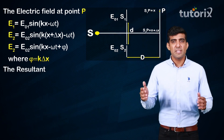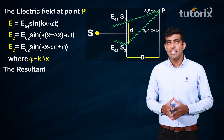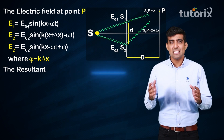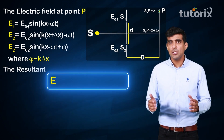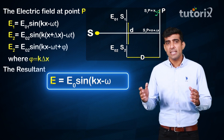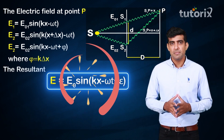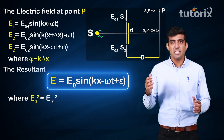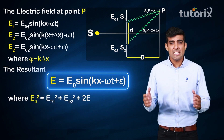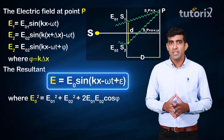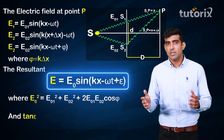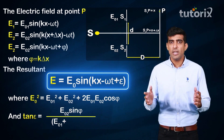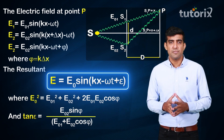The resultant of these two waves at point P can be given by the phasor method: E = E0 sin(KX − ωt + ε), where E0² = E01² + E02² + 2·E01·E02·cos φ, and tan ε = E02 sin φ divided by (E01 + E02 cos φ).